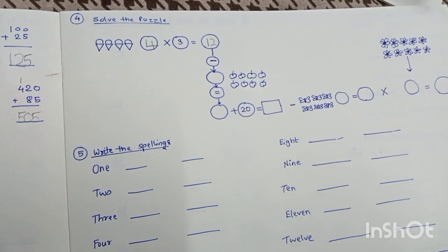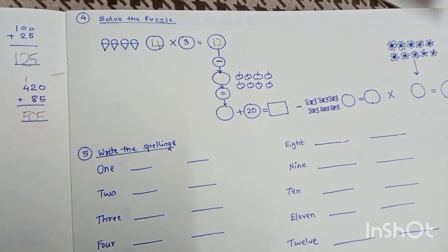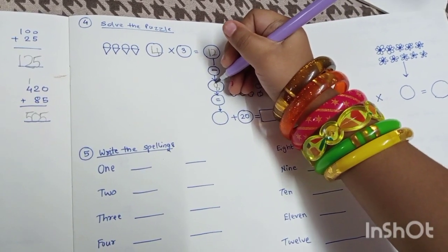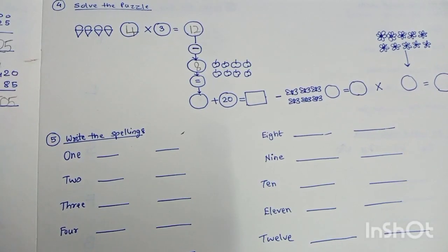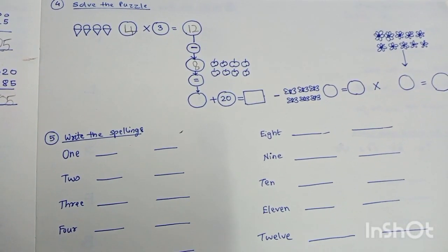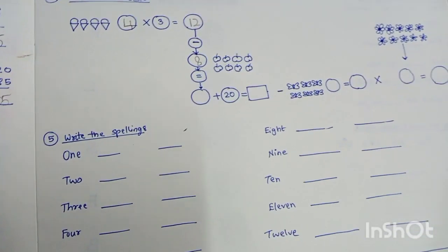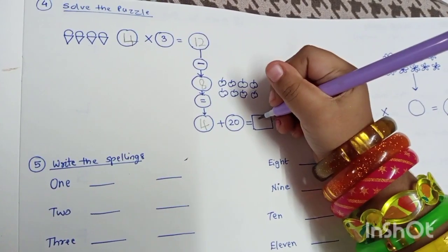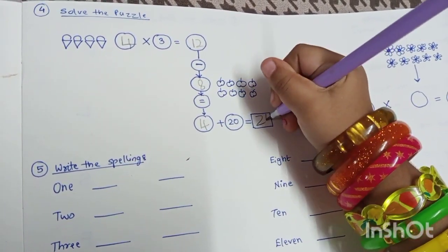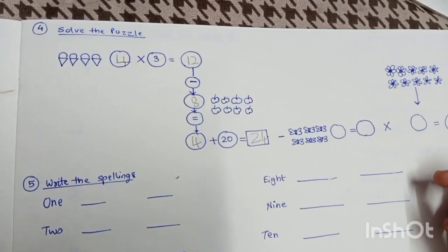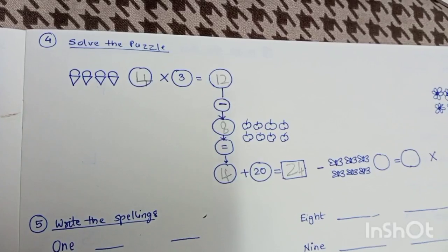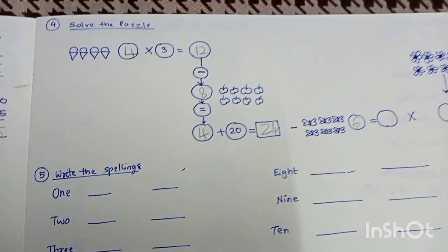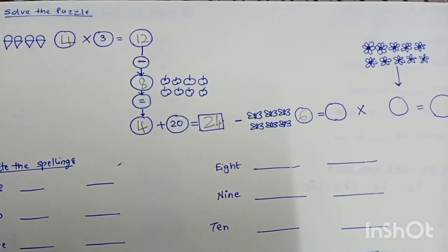Now count the number of apples. How many apples are there? 12 minus 8, right? 8 in the circle — over there. 12 minus 8 is... and what is 20 plus 4? That's easy, right? It's 24. Now count the number of butterflies — 6. Write 6 near the circle. So you do 24 minus 6.